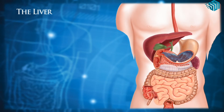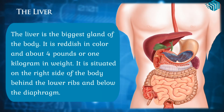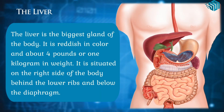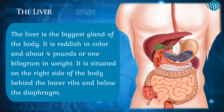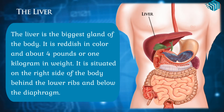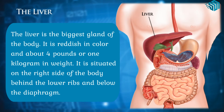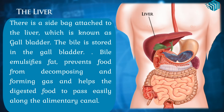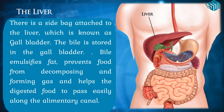The liver is the biggest gland of the body. It is reddish in colour and about 4 pounds, or 1 kg, in weight. It is situated on the right side of the body, behind the lower ribs and below the diaphragm. There is a side bag attached to the liver known as the gallbladder, where bile is stored.